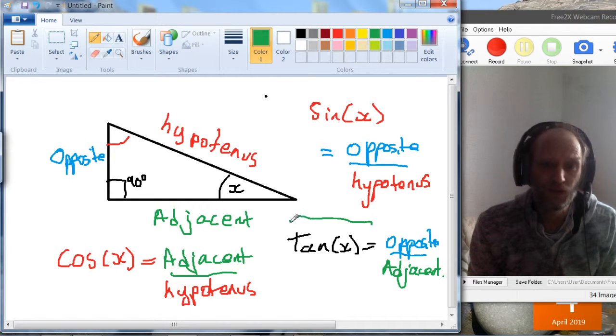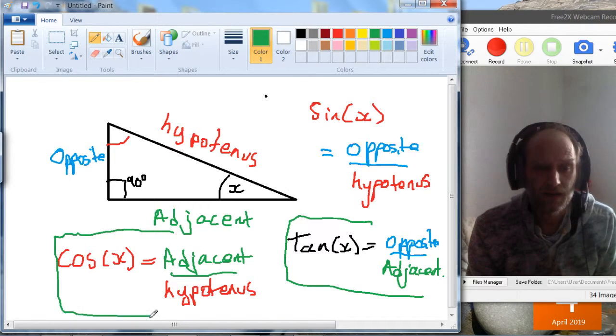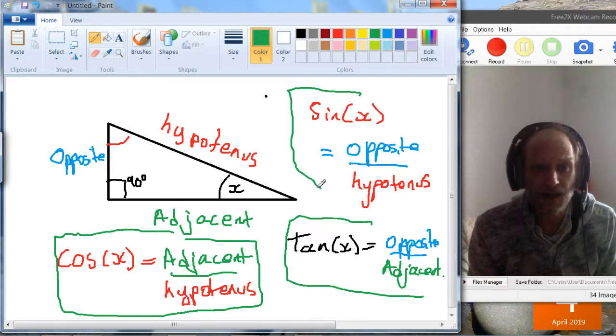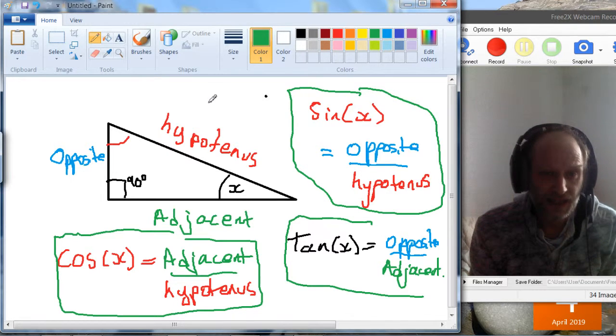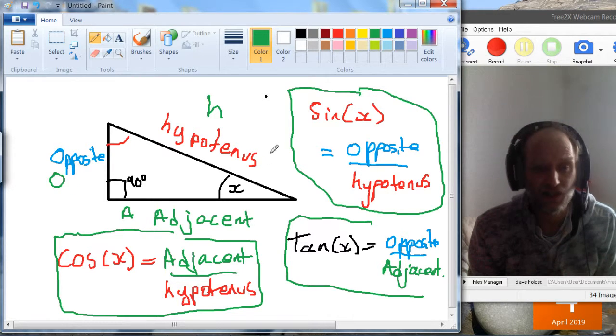So we've got three formulas. And the way I always remember these formulas is let's actually just say this is h, this is a, and this is o, to make it shorter.